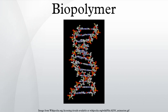There are three main classes of biopolymers, classified according to the monomeric units used in the structure of the biopolymer formed: polynucleotides, which are long polymers composed of 13 or more nucleotide monomers; polypeptides, which are short polymers of amino acids; and polysaccharides, which are often linear bonded polymeric carbohydrate structures.